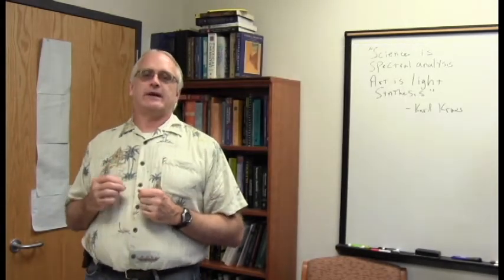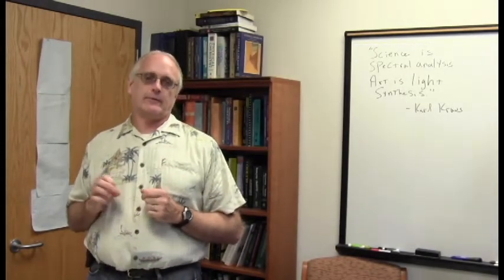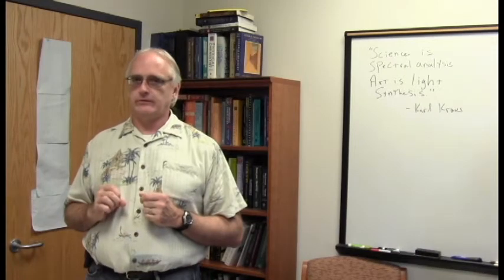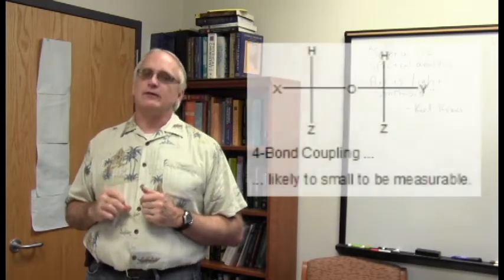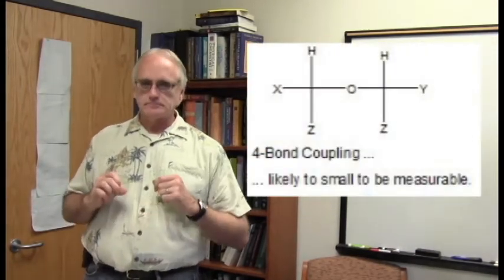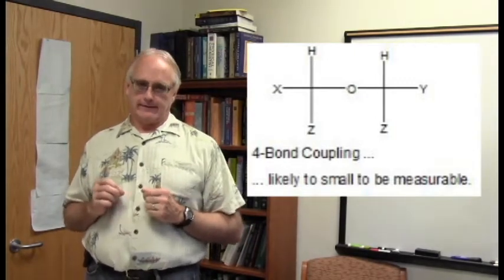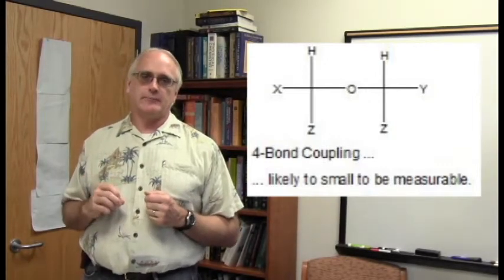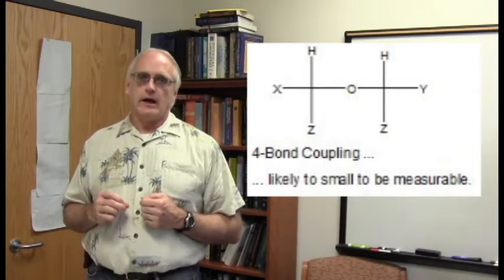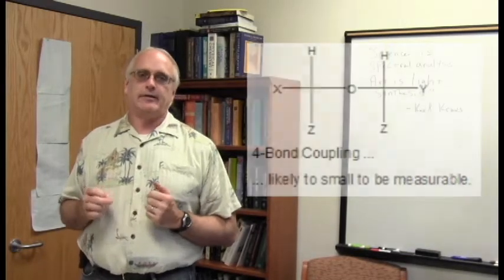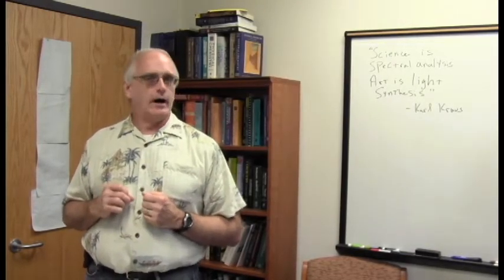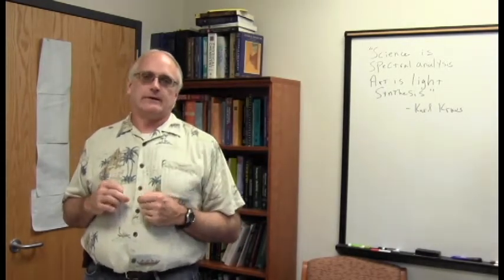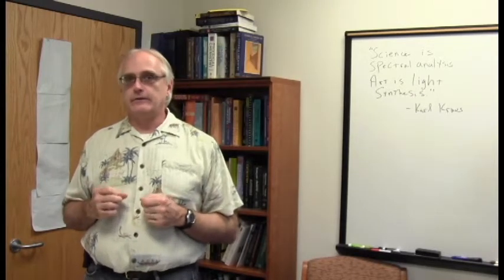If I were to take this example molecule and simply separate the two hydrogens on adjacent carbons, say by inserting an oxygen into the structure, now they are technically four bonds apart from each other. And that will greatly weaken the coupling influence and make the coupling constant probably so close to zero that it's not measurable even on today's more modern instruments. And so proximity is very definitely a strong influence on the magnitude of the coupling constant.